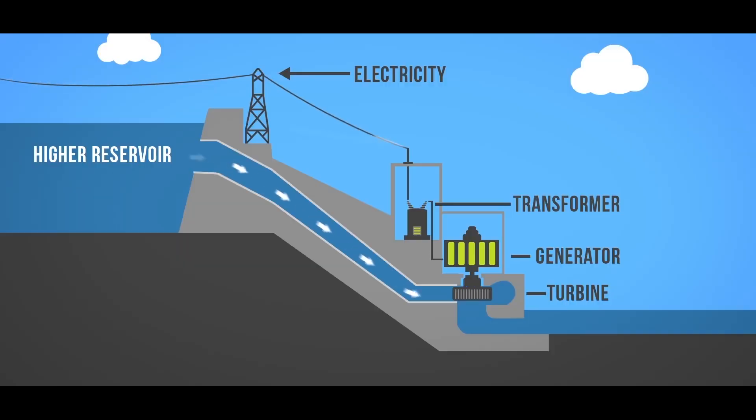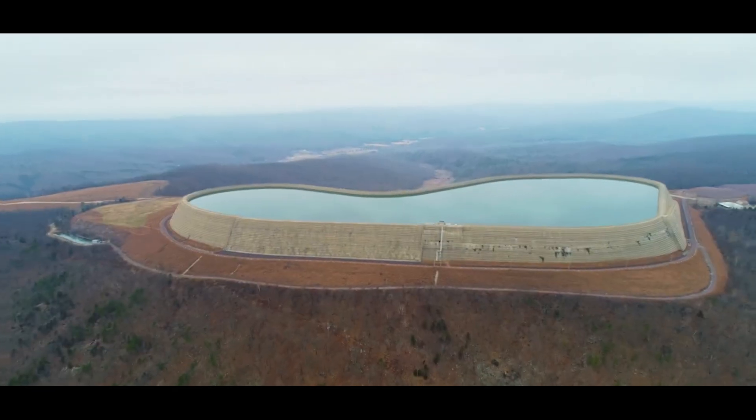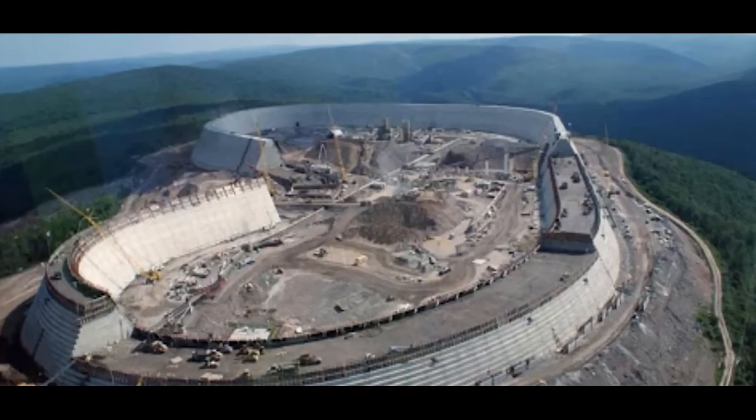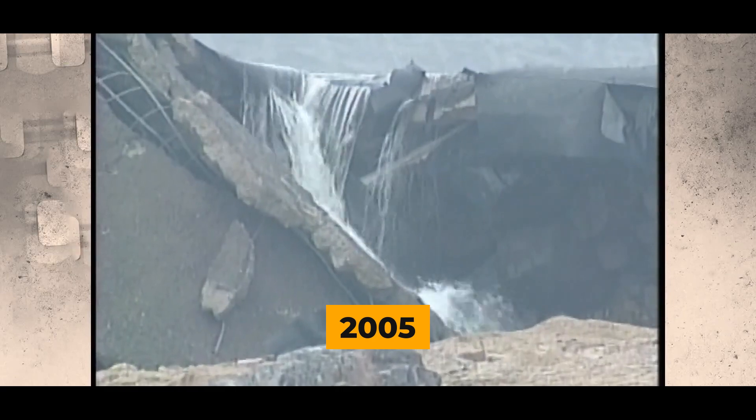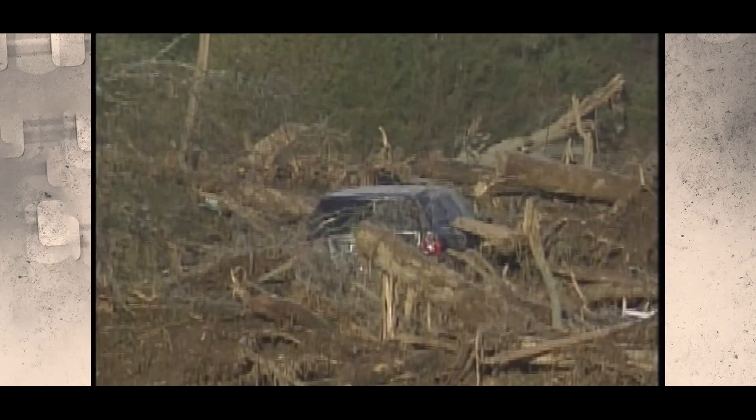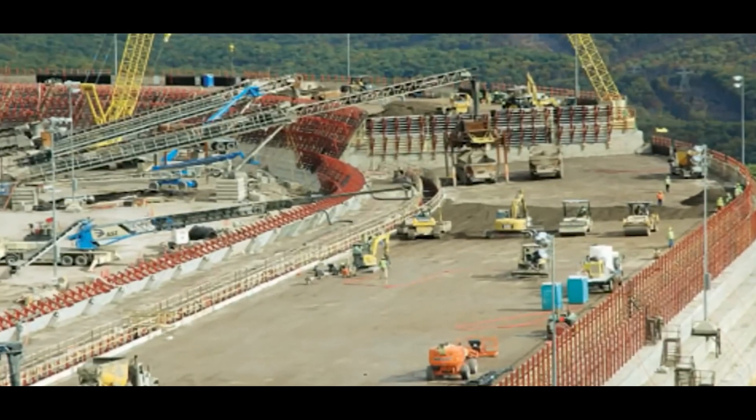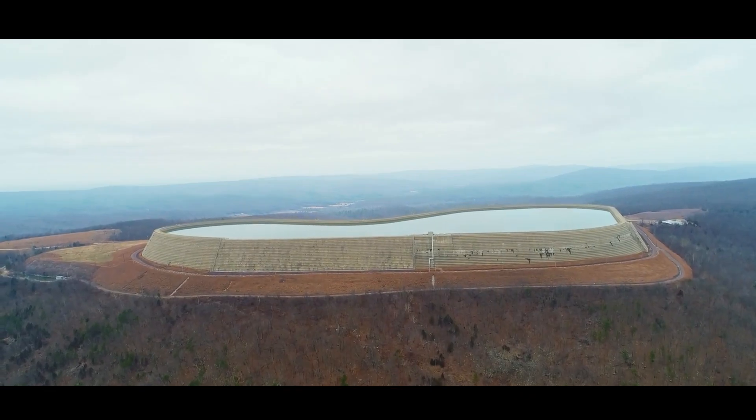While hydroelectricity is a renewable energy source, Tomsok has faced challenges regarding ecological impact. Notably, the initial reservoir design flaws led to a catastrophic collapse in 2005, raising concerns about environmental safety and stability. Since then, significant improvements have been made to address these issues.